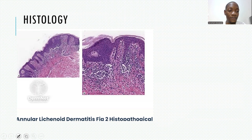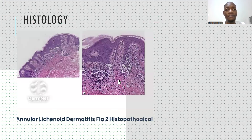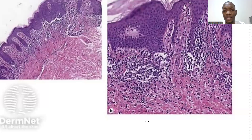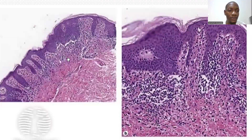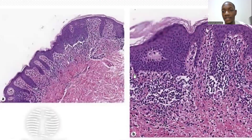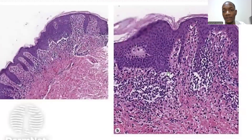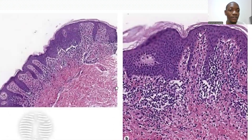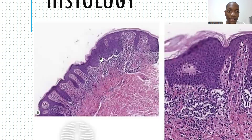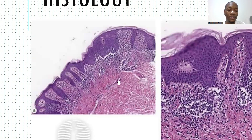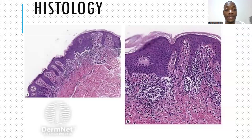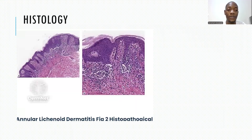This histology picture is from Dermatitis. At the tips of the rete ridges, you can see those necrotic keratinocytes — the reddish ones visible here and in these other areas. This is the histology you shall see, with this dense lymphohistiocytic infiltrate.